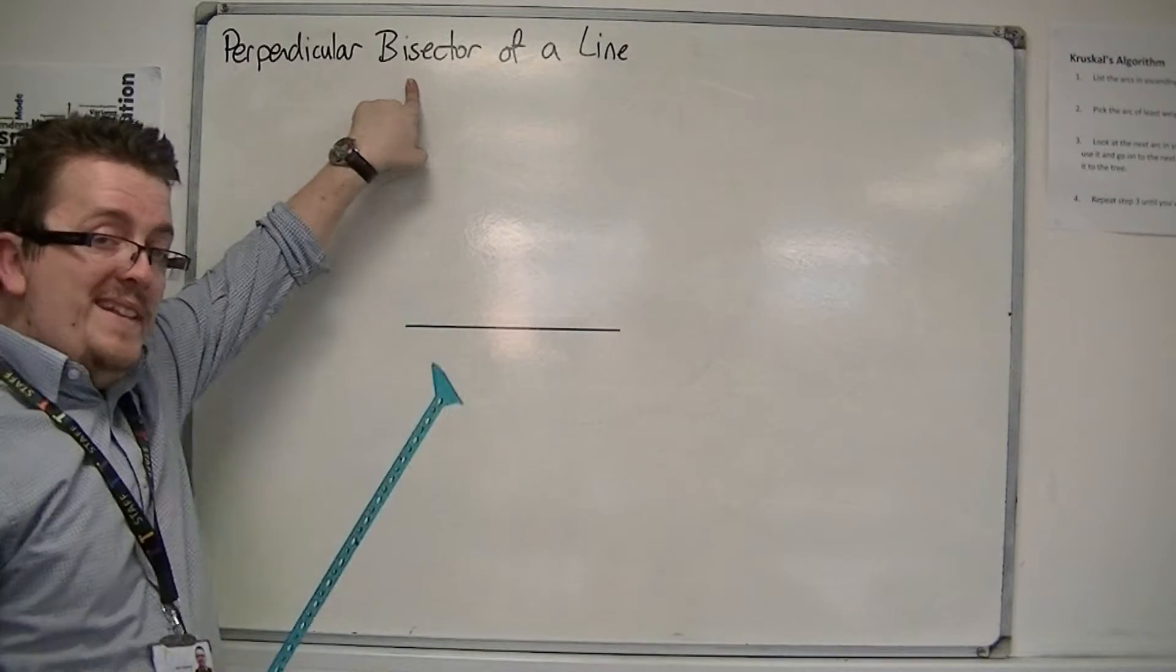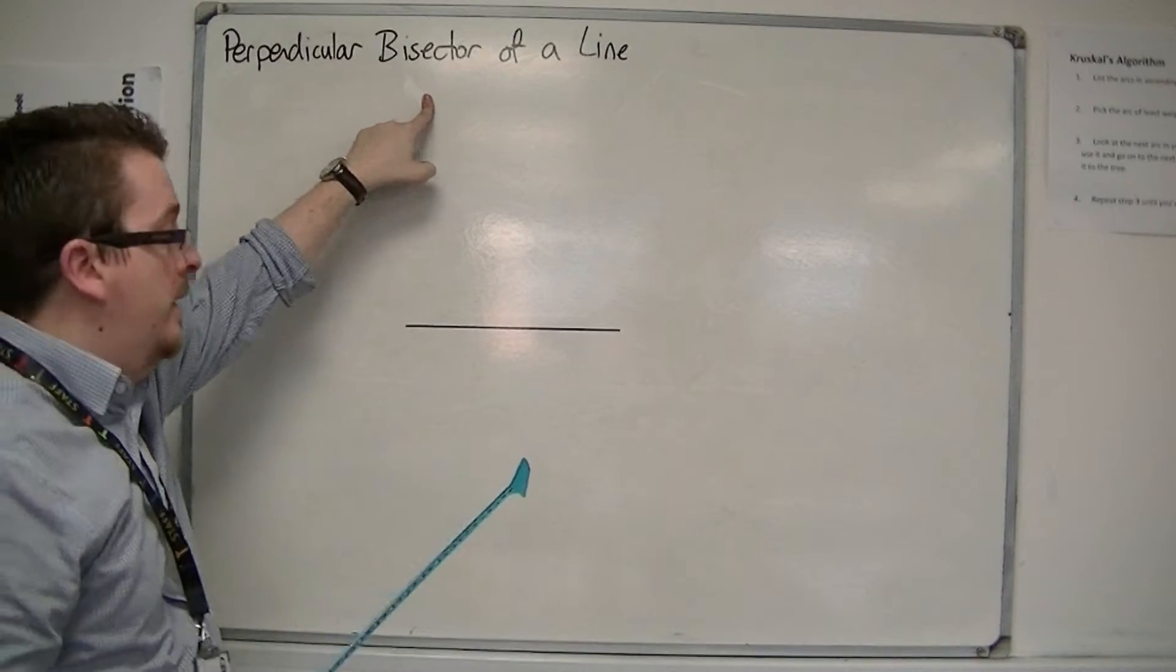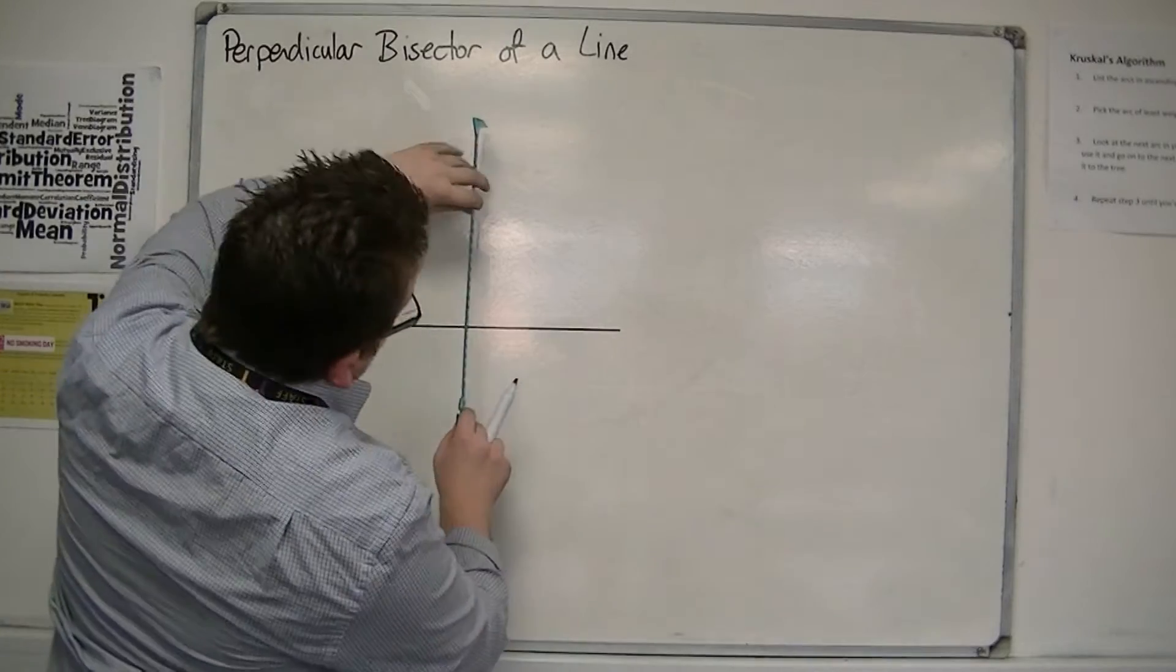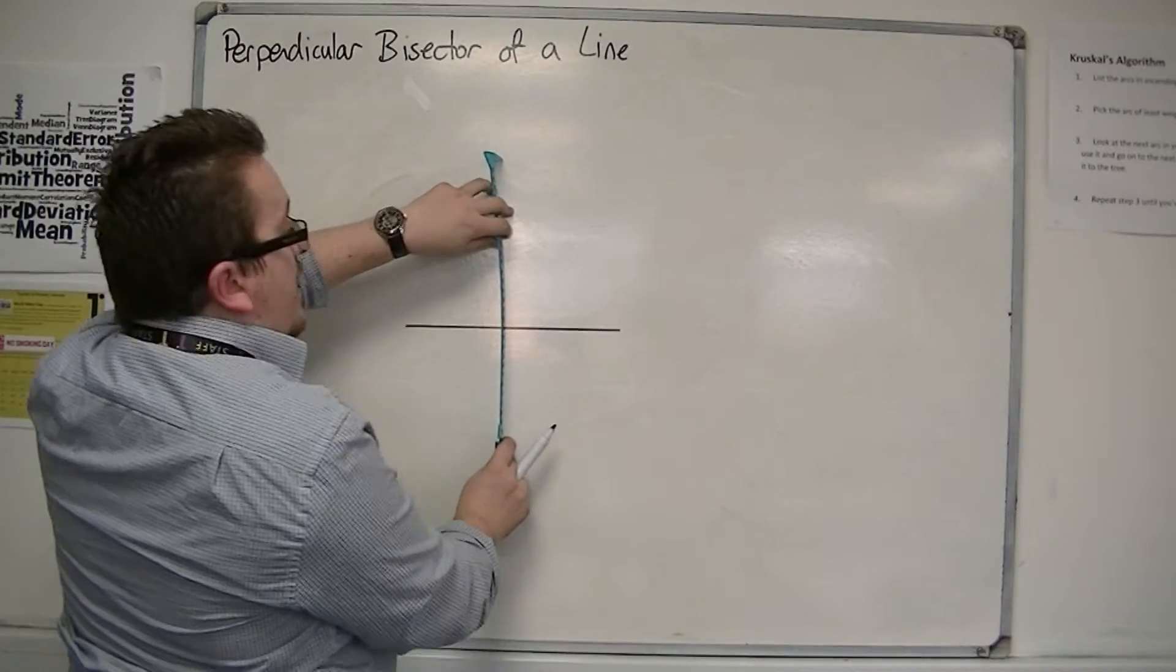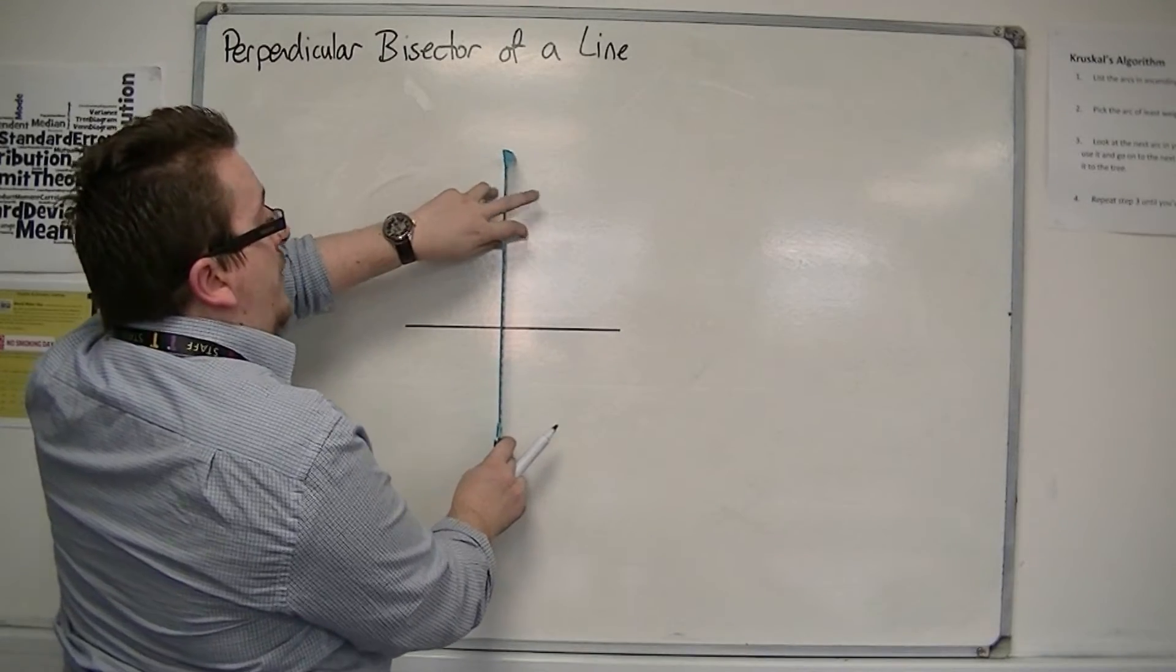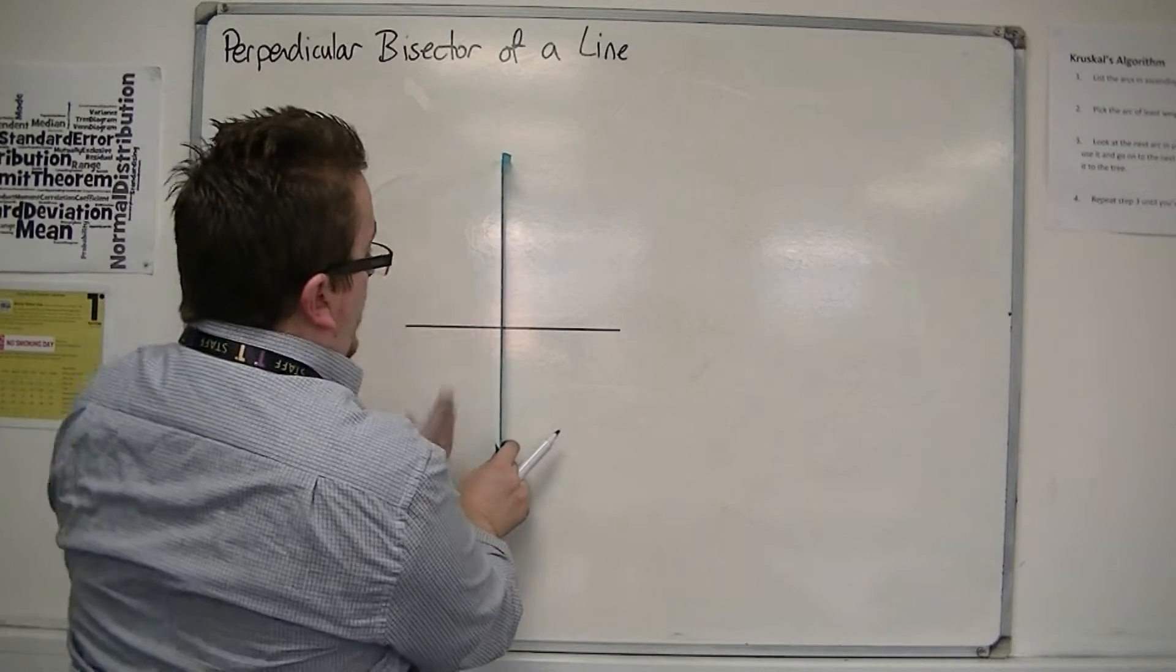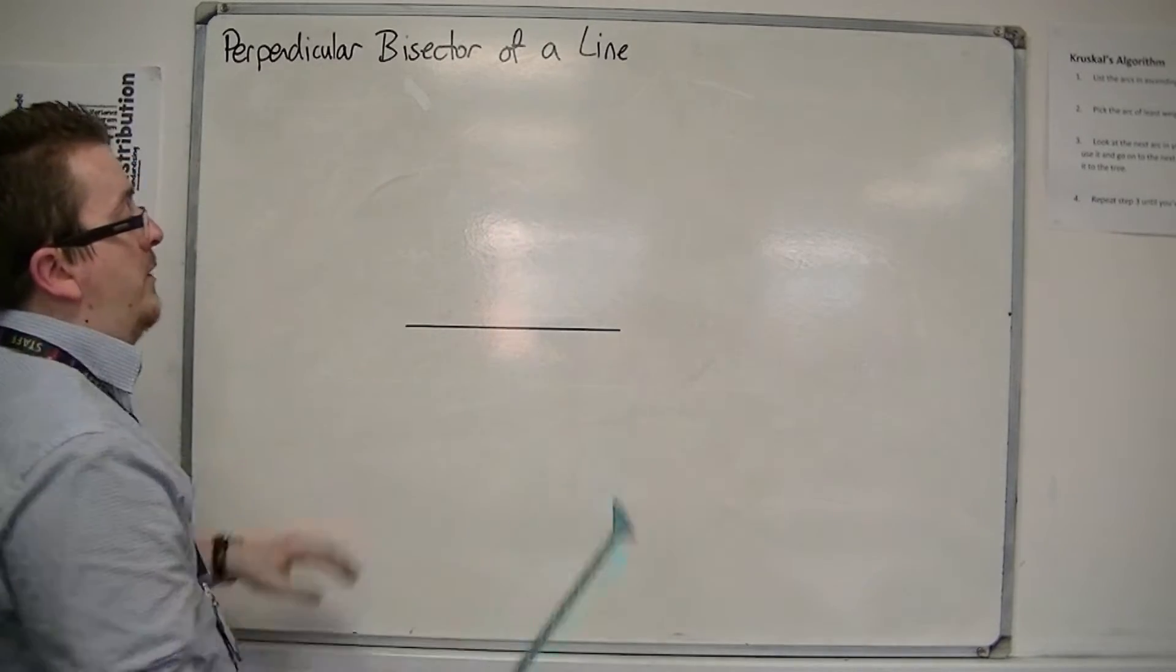The word bisector means cut in half. So it should be a perpendicular line that cuts this line in half. It should be the line going vertically straight through the middle of this one.